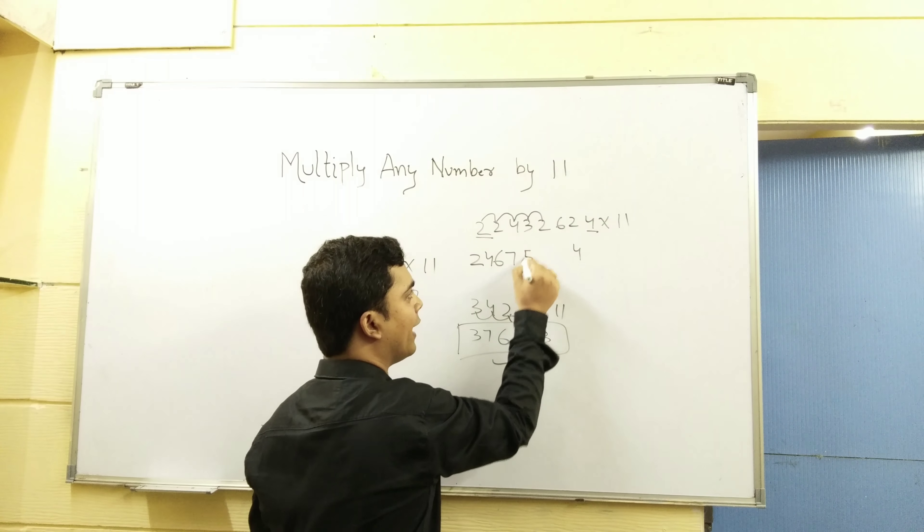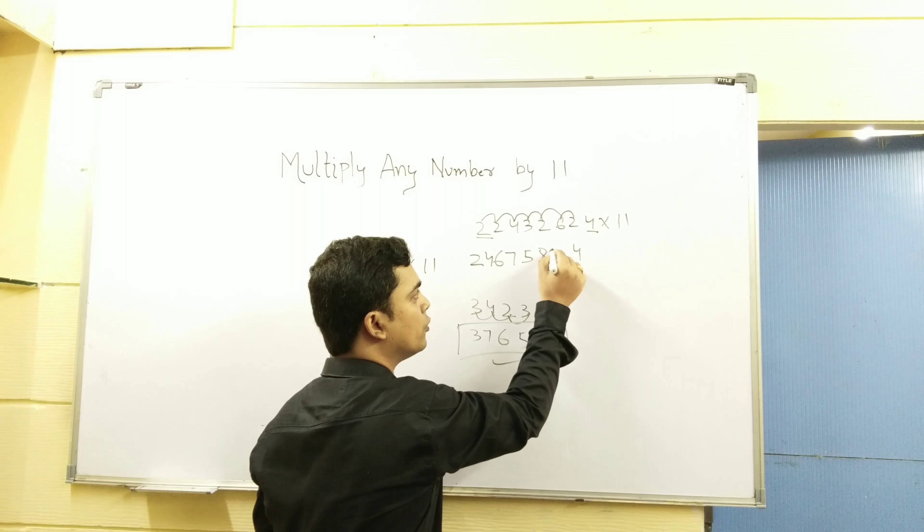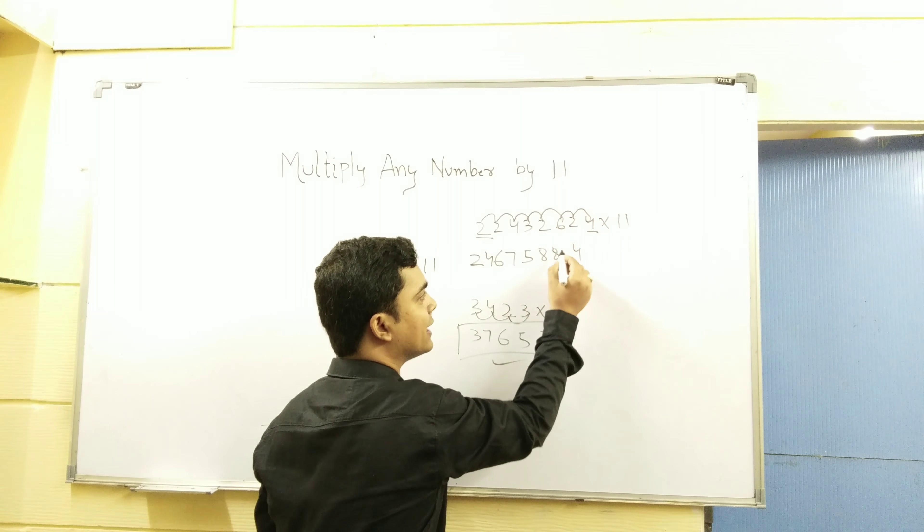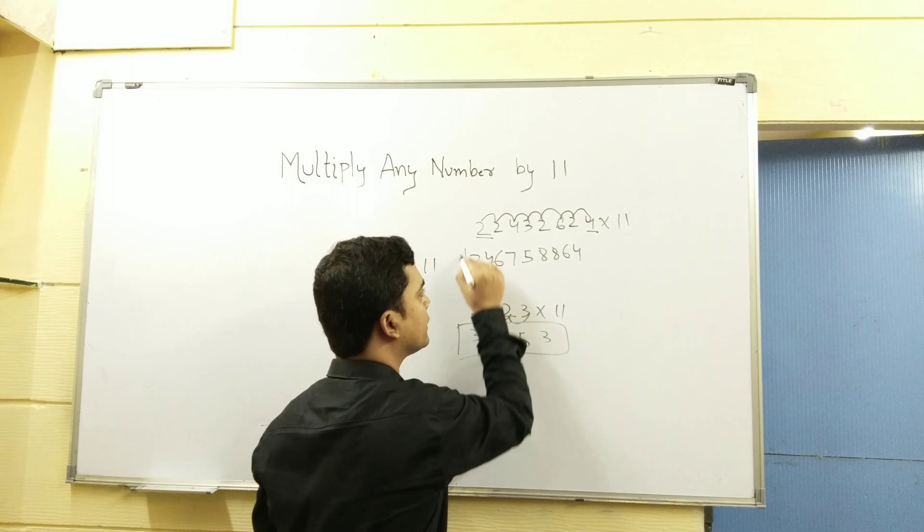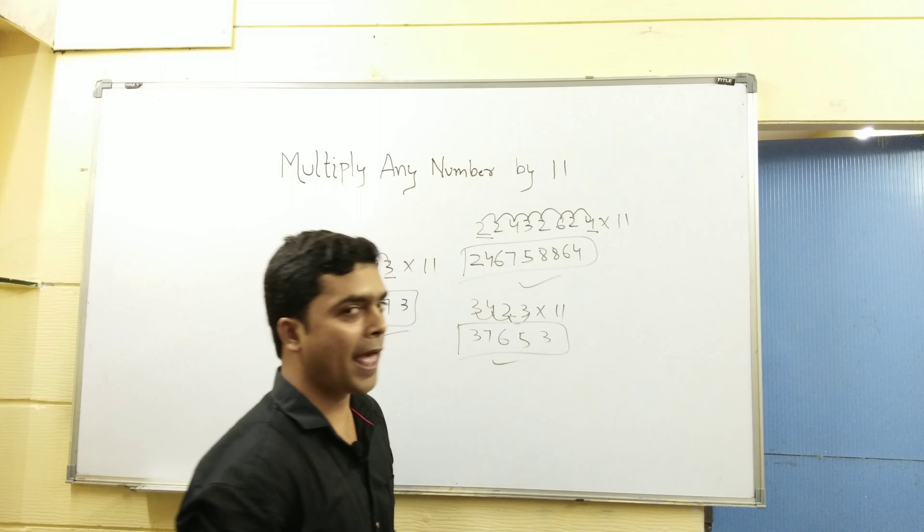3 plus 2, 5. 2 plus 6, 8. 6 plus 2, 8. 2 plus 4, 6. You can see.